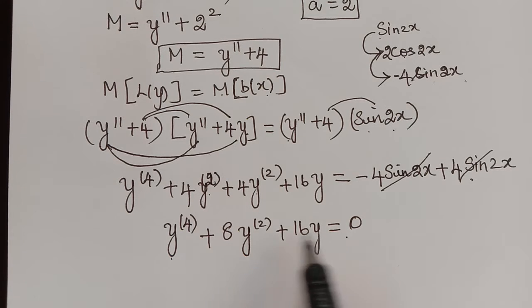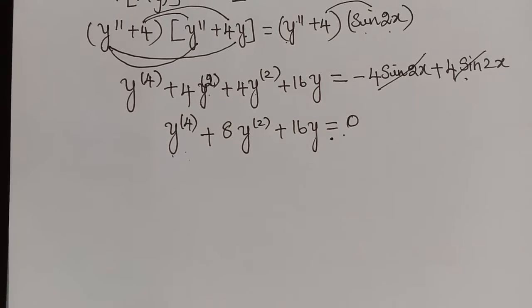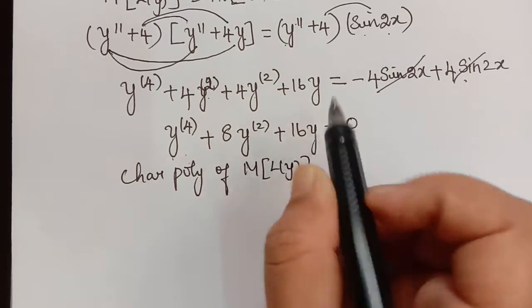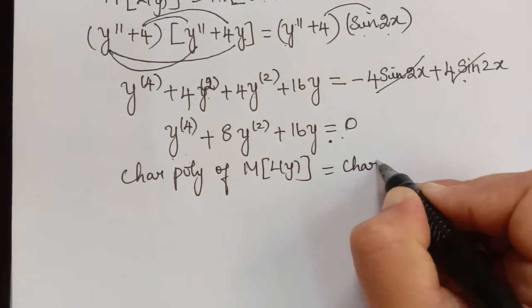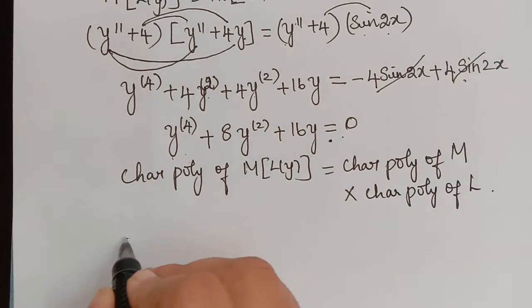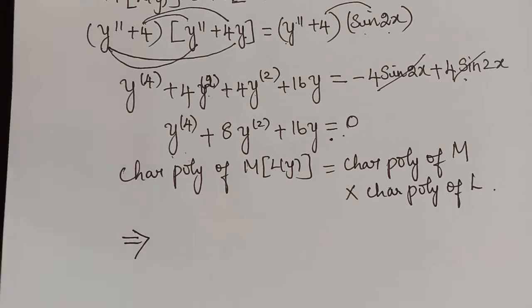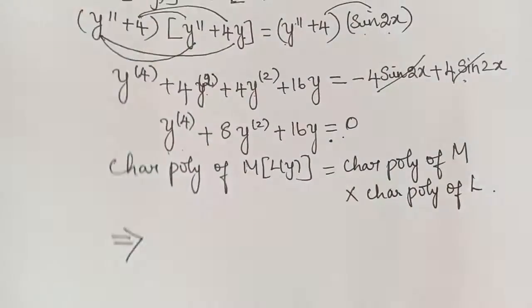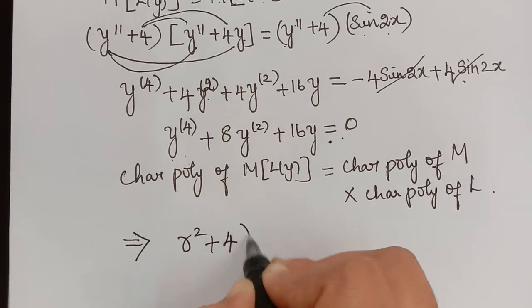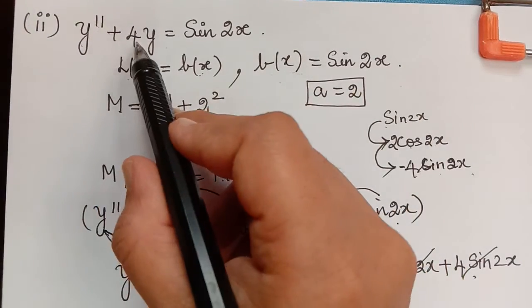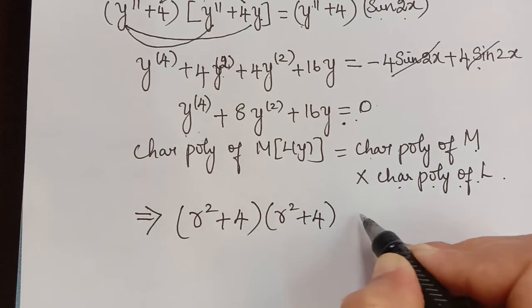This equation is homogeneous, so we find its characteristic polynomial and equate it to zero to find the linearly independent solutions. The characteristic polynomial of M[L(y)] equals the characteristic polynomial of M multiplied by the characteristic polynomial of L. The characteristic polynomial of M is r² + a² = r² + 4, and the characteristic polynomial of L is also r² + 4, giving (r² + 4)(r² + 4) = 0.